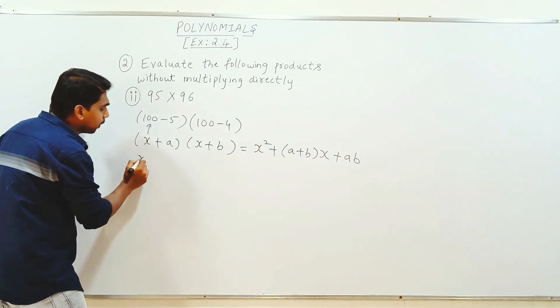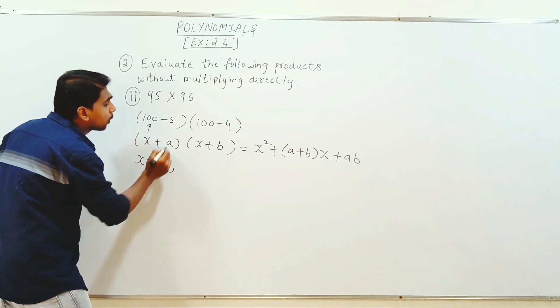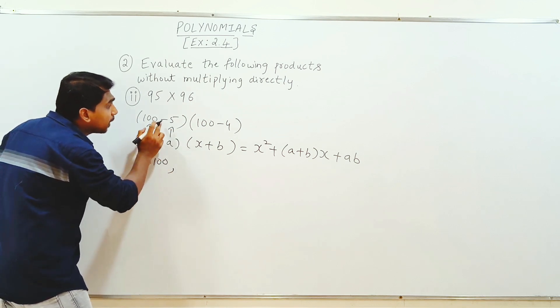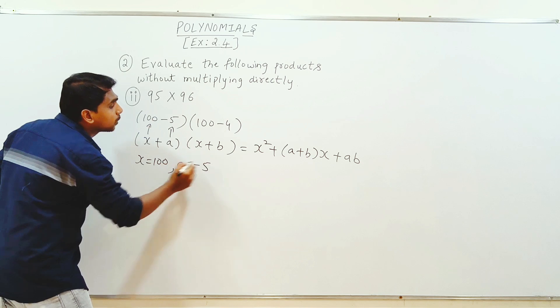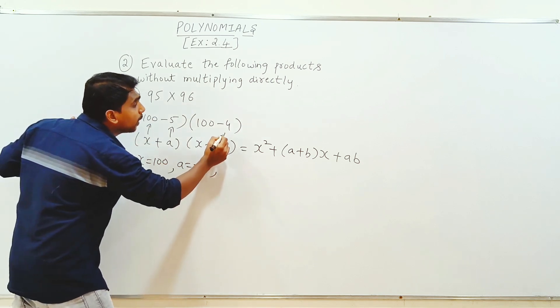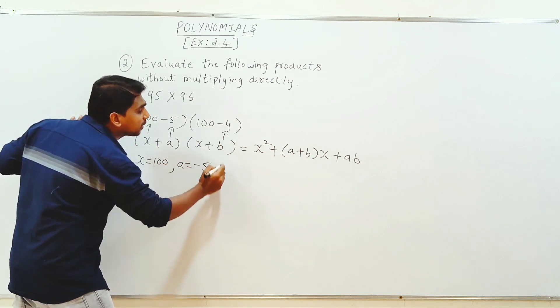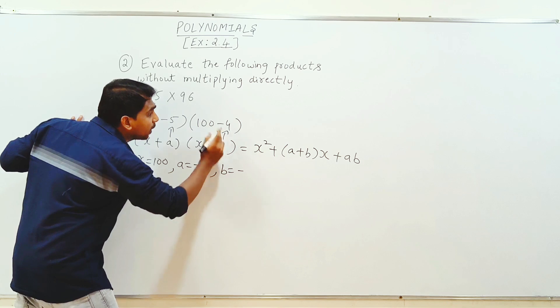What formula is, this formula is 100. A is equal to, a value minus 5. B value is equal to, b value minus 4.